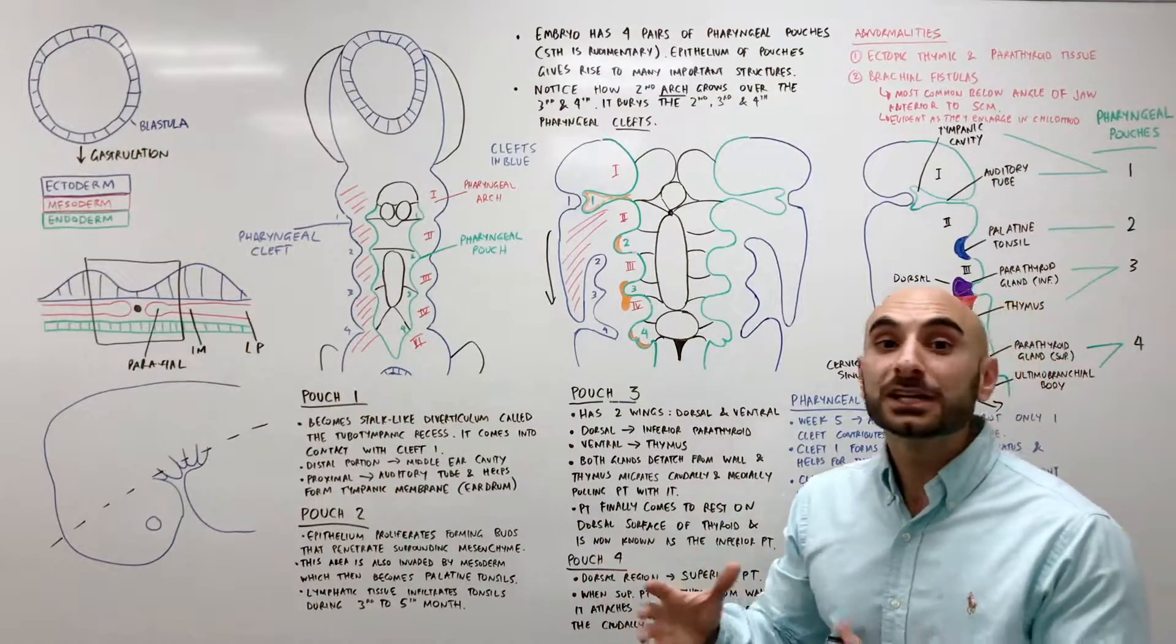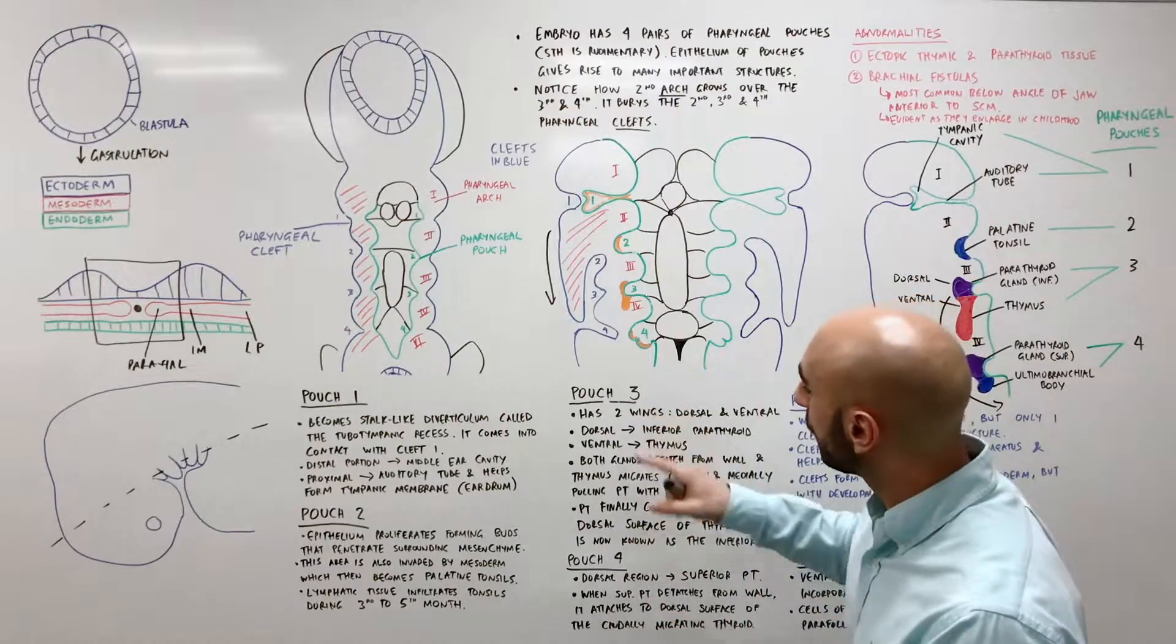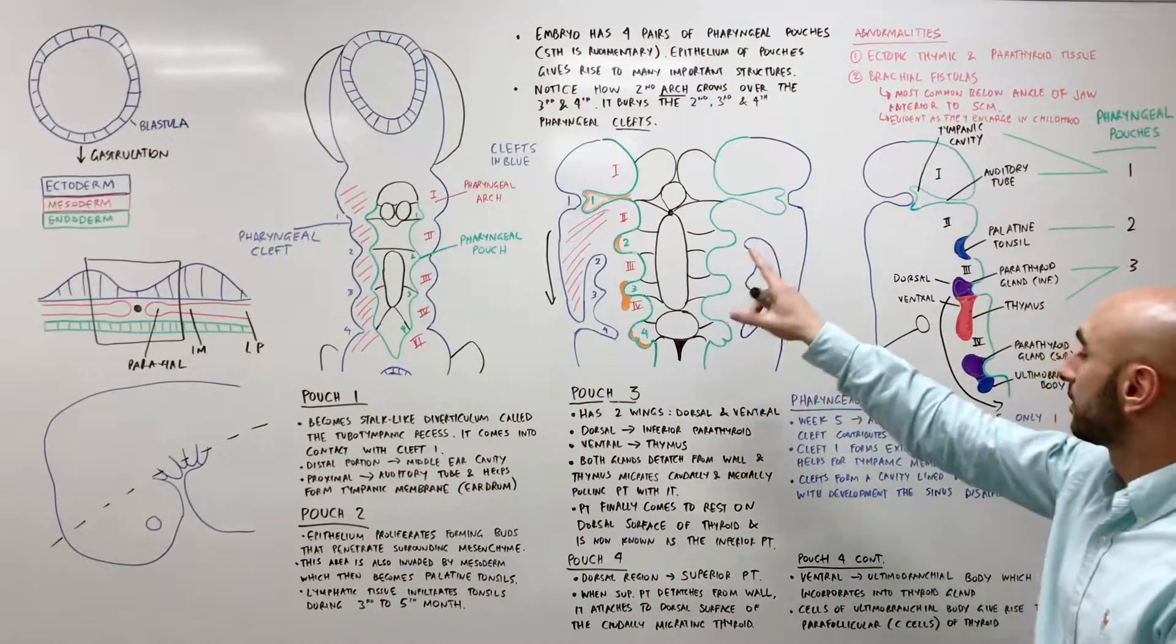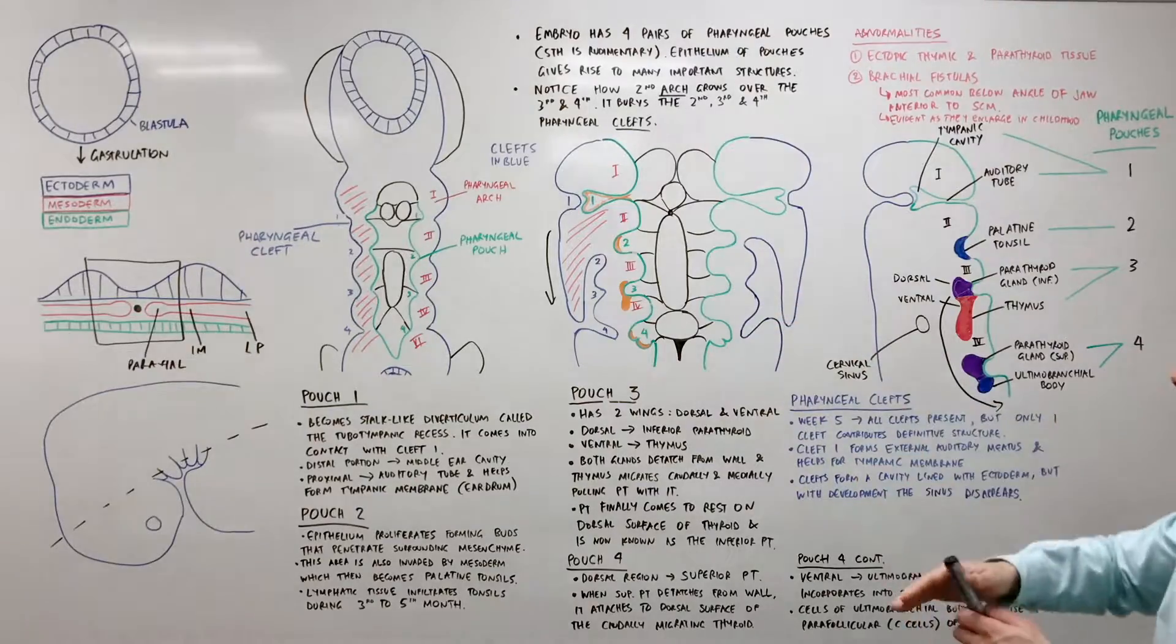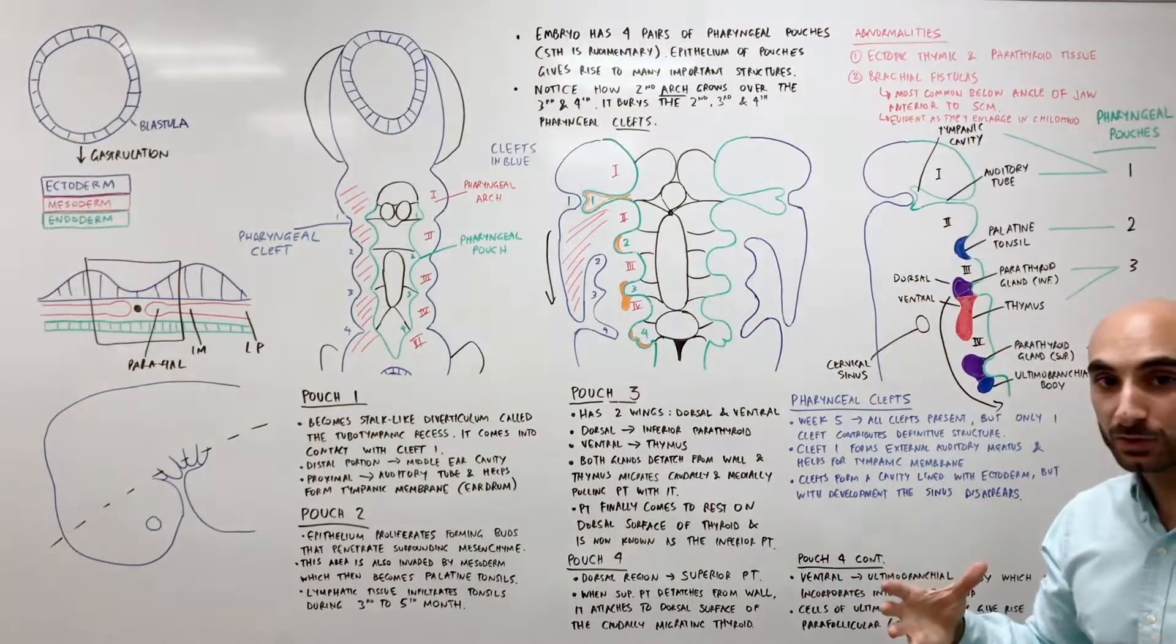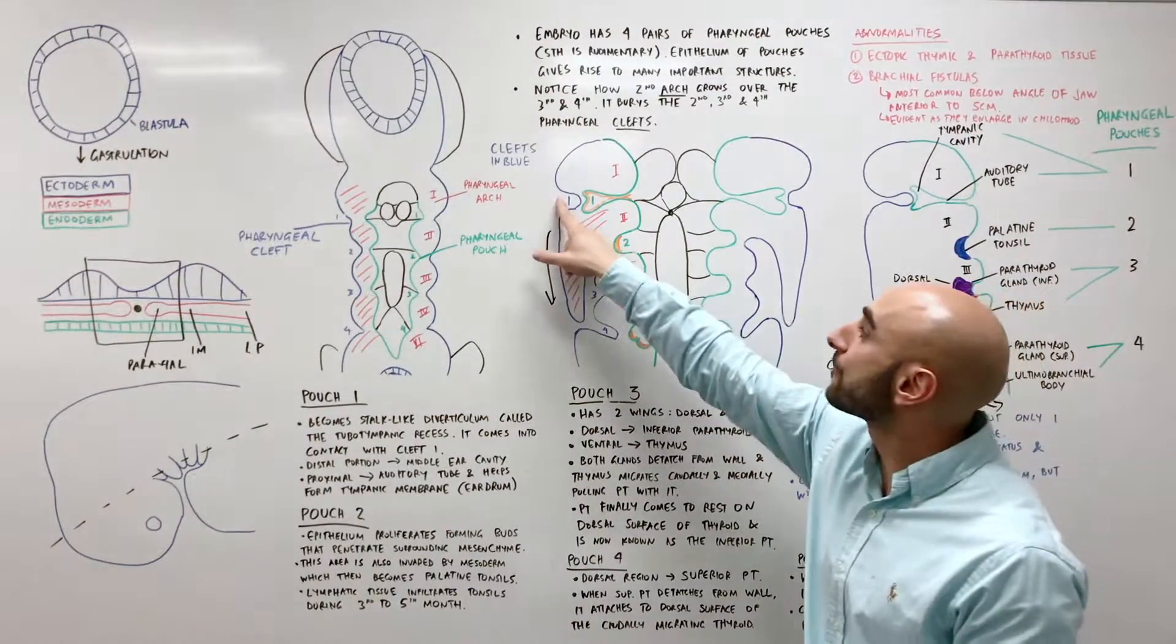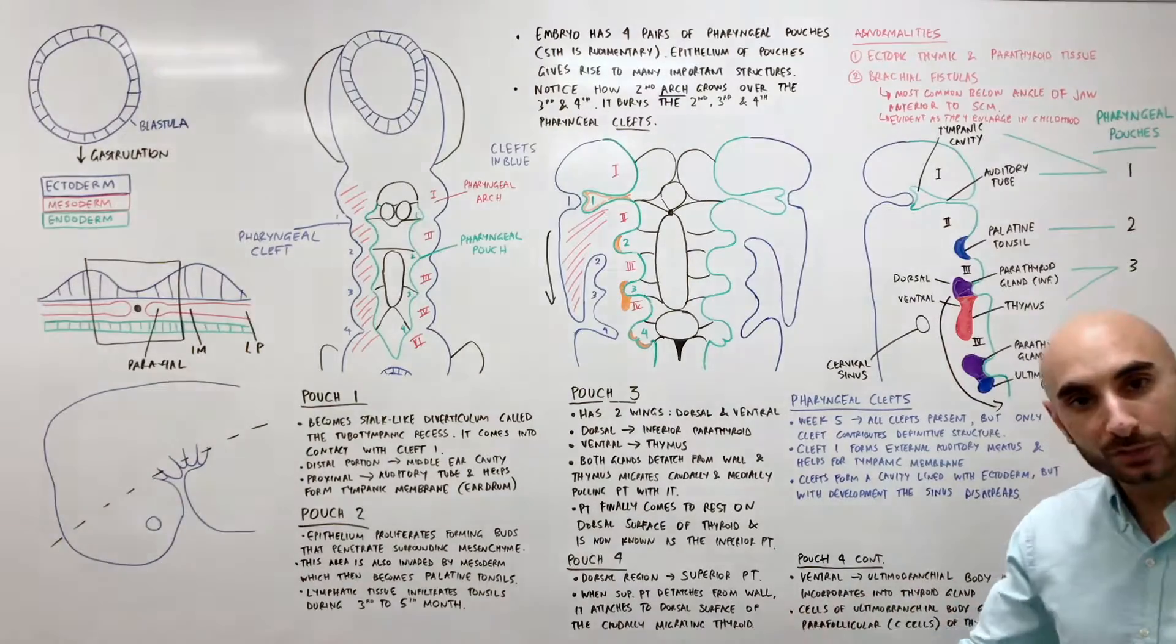The clefts are much easier to talk about because it essentially only becomes one thing. Although we start off with all of the clefts present, only one remain in this final structure. In week 5, you'll have all of them, but only the first pharyngeal cleft will contribute to anything.